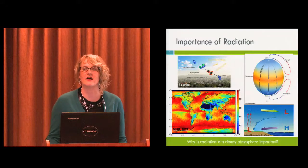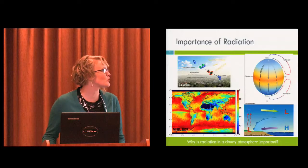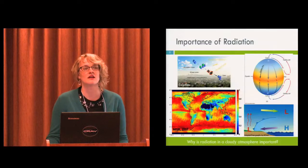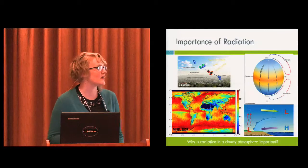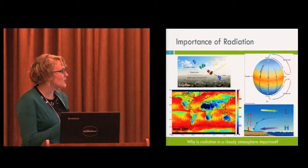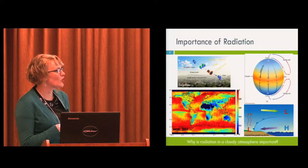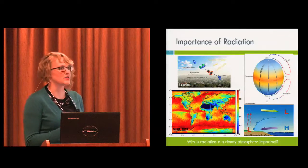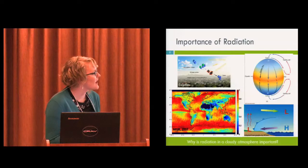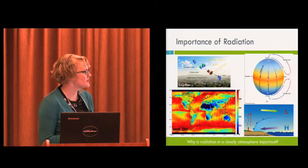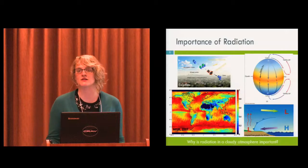Clouds are another thing that can cause uneven absorption of radiation, not just horizontally but vertically in the atmosphere. What I'm showing in this figure is a global cloud fraction, so it's on a scale from zero to one, for the year 2007.